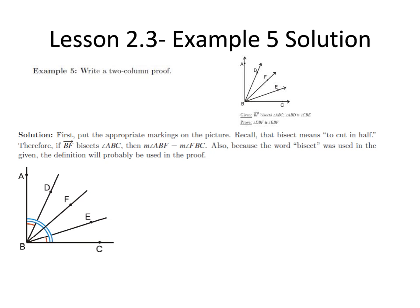First we must mark the picture with the given information. We were told that ray BF bisects, or cuts in half, angle ABC. Therefore making the measure of angle ABF equal to the measure of angle FBC.